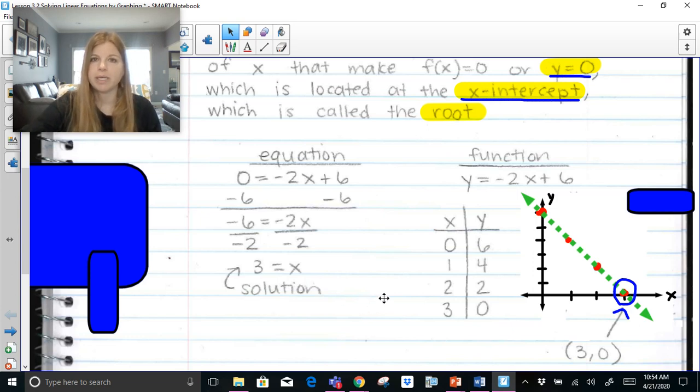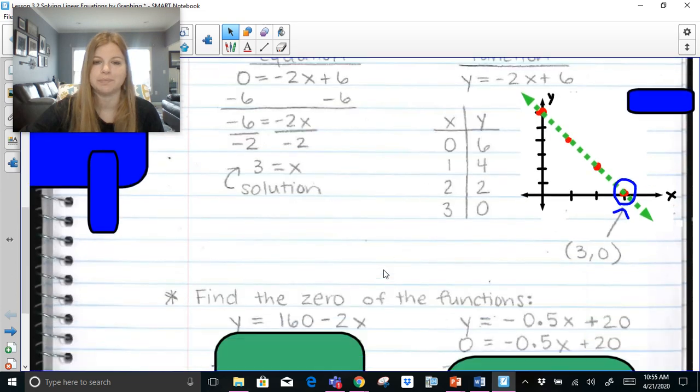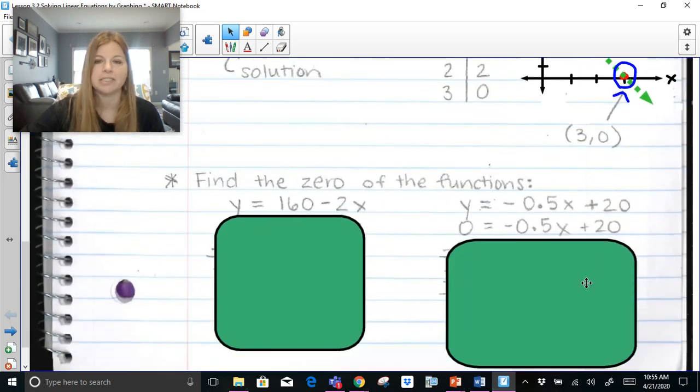The same value we get as a solution to our equation is the same thing we get as the x-intercept when we graph that equation as a function. It's the same number. It's not a coincidence. It's always going to be that way. So setting an equation equal to 0 and solving for x is the same thing as replacing that 0 with y and graphing it. The x-intercept is the same value that we get for our equation.